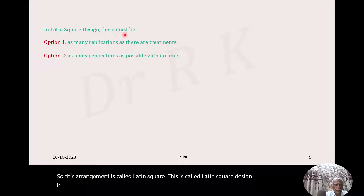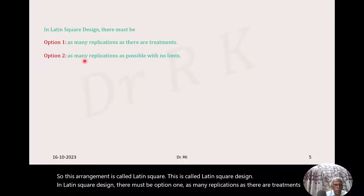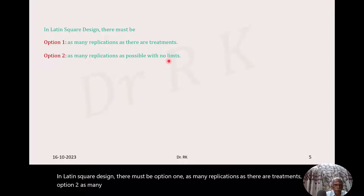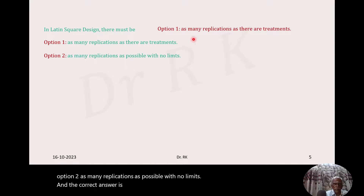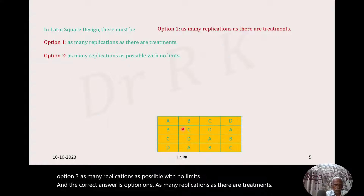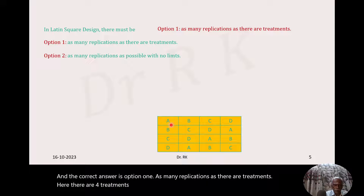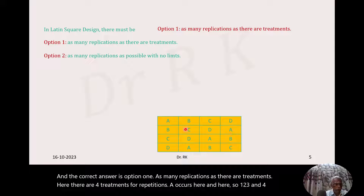In Latin square design, there must be as many replications as there are treatments — that is option 1, which is the correct answer. Option 2, as many replications as possible with no limits, is incorrect. Here there are four treatments and four repetitions. Treatment A occurs four times — once in each row and once in each column — so replications are four.